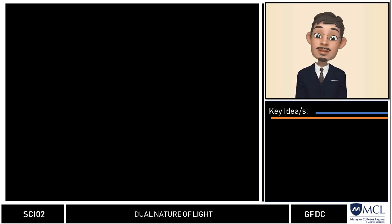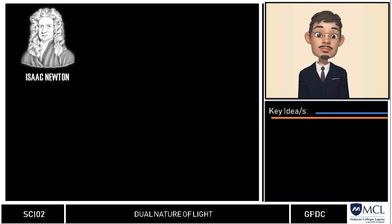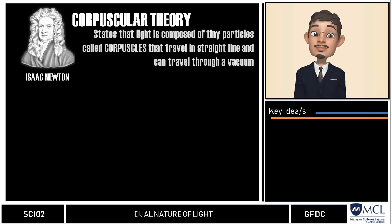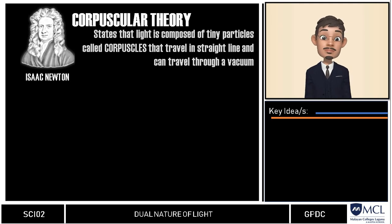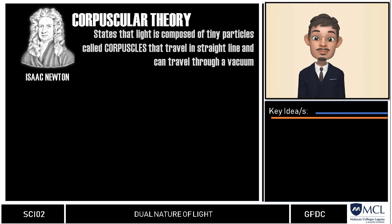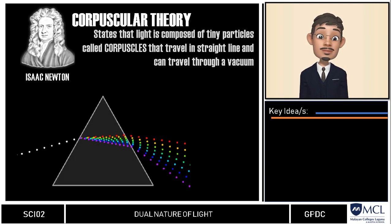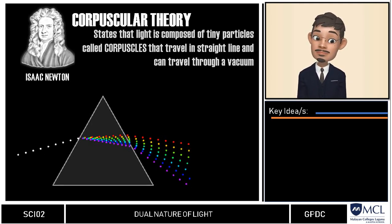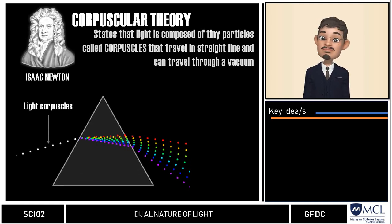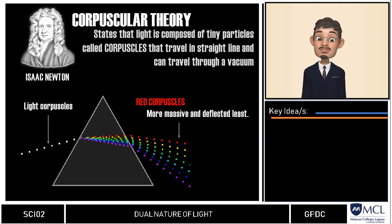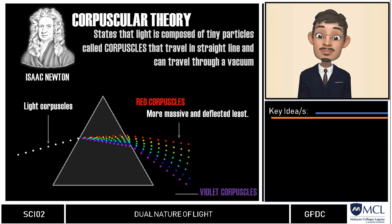Then came Isaac Newton, who proposed the corpuscular theory of light, which states that light is composed of tiny particles called corpuscles that travel in a straight line and can travel through a vacuum. Like Descartes, he used a prism in his experiment, where he observed that red light refracted the least, while violet light refracted the most.